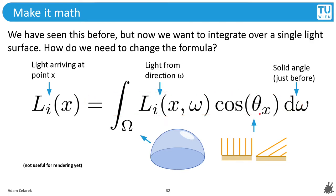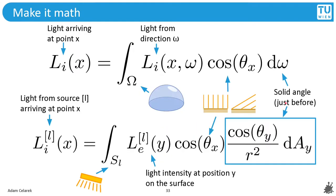We have seen this integral before, but now we want to integrate over the surface of a light source and not over the hemisphere. These are the changes that we have to apply. We have seen the relationship between the solid angle and the surface patch before, and we can just exchange them. If we do this, we also have to change this one. Instead of measuring the light which is coming in from a certain direction, we measure the light that is emitted from the surface in this patch.